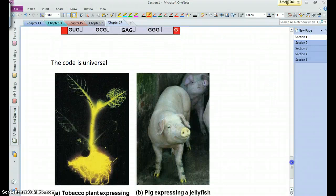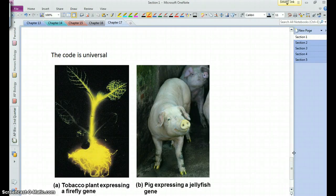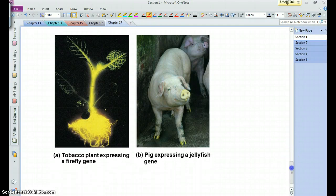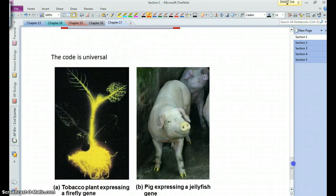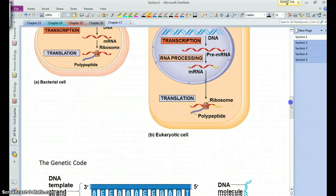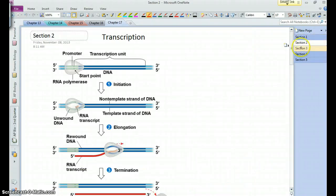All right, and so this code is essentially universal. The vast majority of organisms use the code in the same way, such that this basically makes genetic engineering possible. So you can move DNA between different types of organisms, even between plants and animals, between fungi, bacteria, animals - anywhere - and they will all interpret the code in the same way because of its universality. All right, so there's section one. We'll stop that video and move on to transcription in the next video.